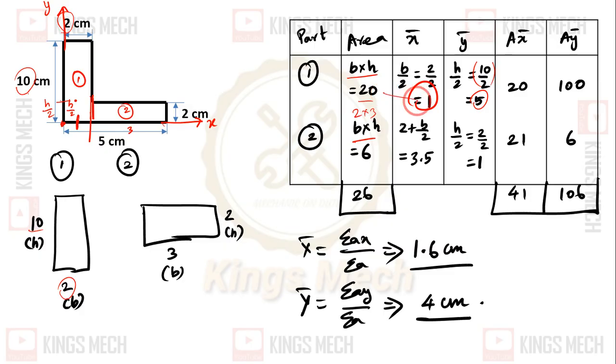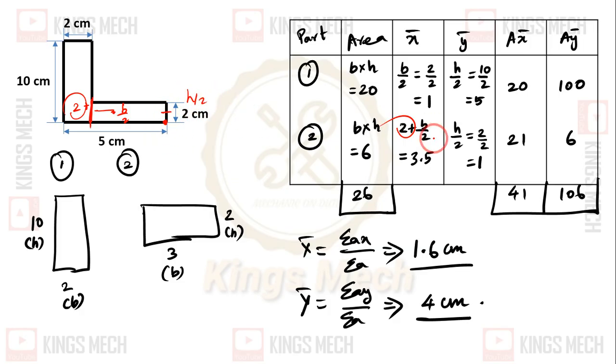The second section does not touch the axis. The distance is 2 centimeters plus the centroid at b by 2, so 2 plus b by 2. For the height h, it is touching the axis, so it is h by 2. H value is 2 by 2 which is 1. Multiplying 6 into 3.5 and 6 into 1, we have the values.